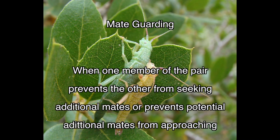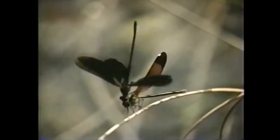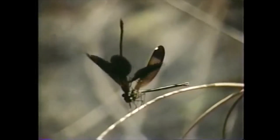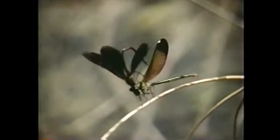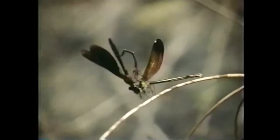Mate guarding occurs at copulation when one member of the pair prevents the other from seeking additional mates or prevents potential additional mates from approaching. In this video, you will see an example of mate guarding. Here is a male dancefly seizing a female by the neck. He then uses the claspers on his hind end to grip the female in the matching depression behind her head. Rivals are typically unable to pull them apart.